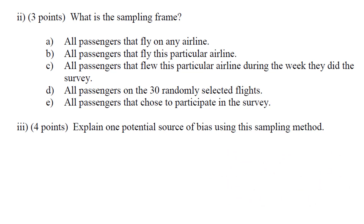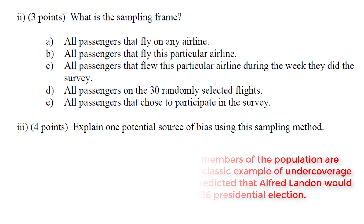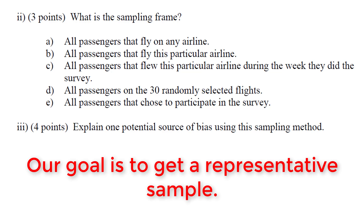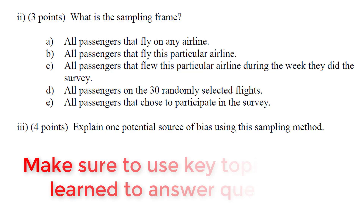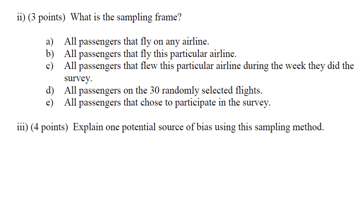Next, we could talk about under coverage. Imagine we did the survey during spring break, when a lot of college students are flying. Maybe college students are happy or unhappy in a way that the general population is not. Under coverage means we did not properly sample the population and get all views. If we had too many college students in our sample, we would have undercovered our general population. On a test, make sure to mention key topics such as response bias, under coverage bias, and non-response bias.